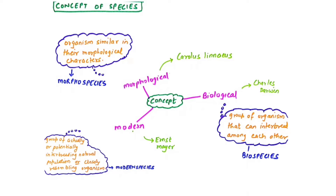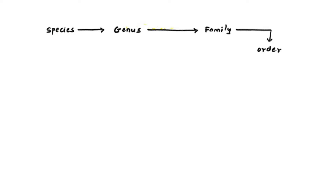Morpho-species is based purely on similar appearance. Bio-species focuses on interbreeding, but interbreeding does not always result in offspring. As per the modern concept, organisms should be actually or potentially interbreeding and at the same time should produce new offspring. Therefore, the modern concept of species is more widely accepted.